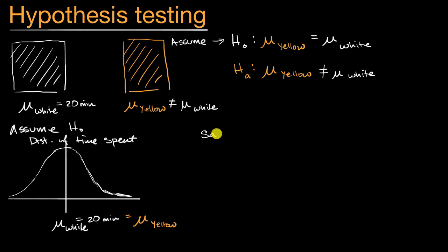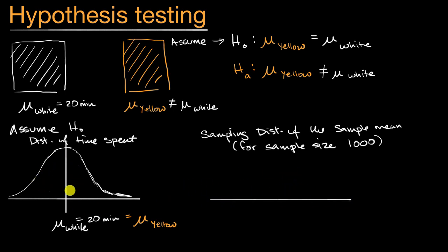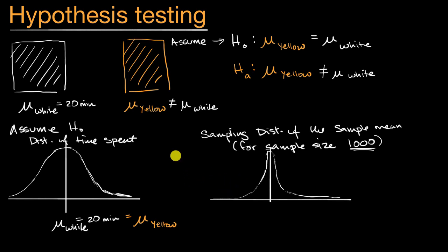One of the things we'll talk about in future videos is that given this distribution, you can come up with another distribution — the sampling distribution of the sample mean for a given sample size, say n = 1,000. This distribution will look like the one we described, but narrower around the mean. The larger your sample sizes, the narrower it gets. This isn't the distribution of time individuals spend on the site — it's the distribution of sample means you might get if you repeatedly took samples.